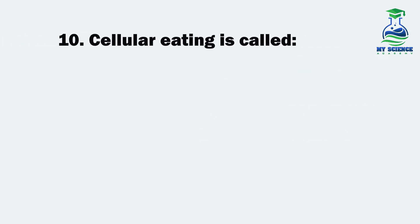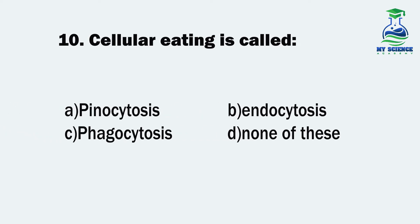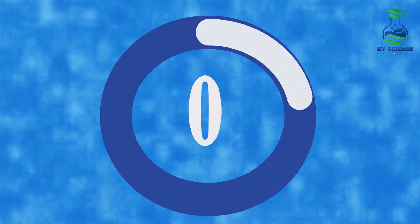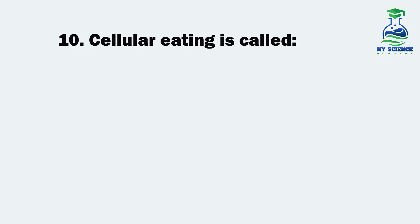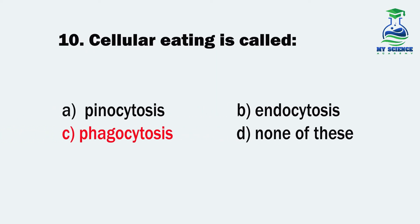Question 10. Cellular eating is called: A. Pinocytosis, B. Endocytosis, C. Phagocytosis, or D. None of these. And the correct option is C. Phagocytosis.